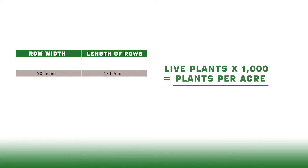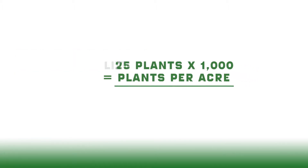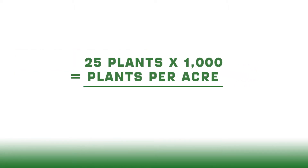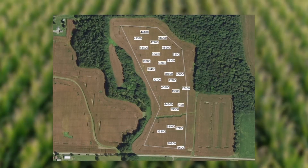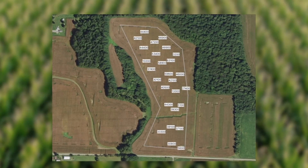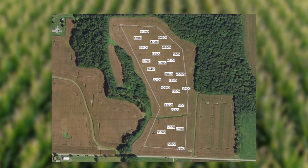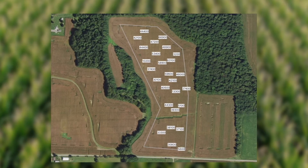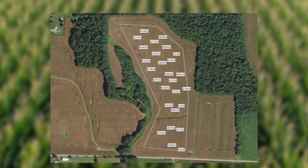For example, if you have a field with 30-inch rows, you will measure out 17 feet 5 inches and count the number of plants. If there are 25 plants, the estimate is 25,000 plants per acre. Average that count with your other sample counts to get an accurate count of the entire field.